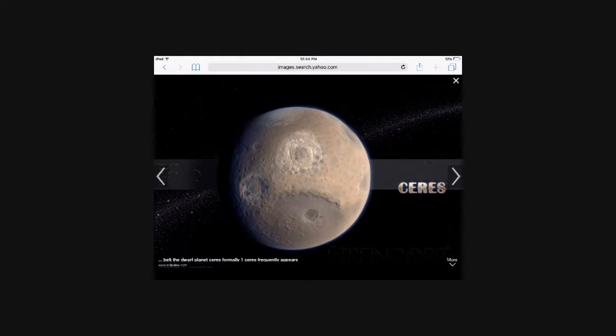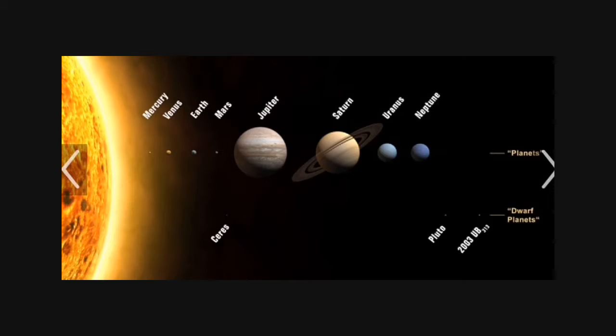Ceres was discovered in 1801. It was so tiny compared to Earth. Ceres is 143 million miles away from the sun.